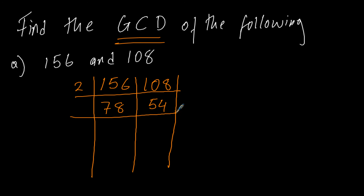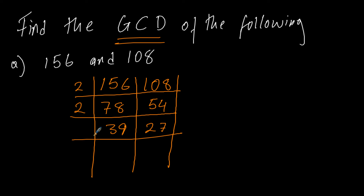Provided we are still having both even numbers, we continue with the 2. So 78 divided by 2 we get 39. So we no longer have both even, so 2 can't divide any more. We go to the next prime factor, which is 3. And 3 can divide both of these numbers, so we divide by 3: 39 divided by 3 we get 13, and 27 divided by 3 we get 9.